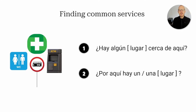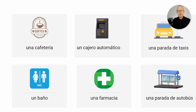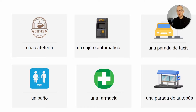Lastly, let's look at how to ask for the existence of specific places or common services. You could ask: ¿Hay algún...cerca de aquí? — Is there any [place] nearby? Or: perdone, ¿por aquí hay un/una [place]? Common places you might ask about include una cafetería, un cajero automático — an ATM — una parada de taxis, el baño — the bathroom — or una farmacia — a pharmacy.